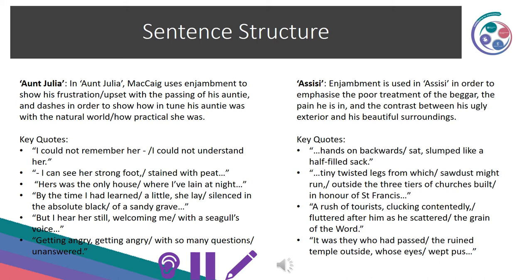In Assisi, McCaig also uses enjambment to emphasise the poor treatment of the beggar, the pain he's in, and the contrast between his ugly exterior and his beautiful surroundings. Key quotes: 'Hands on backwards, sat slumped like a half-filled sack', 'Tiny twisted legs from which sawdust might run, outside the three tiers of churches built in honour of St Francis', 'A rush of tourists clucking contentedly, fluttered after him as he scattered the grain of the word', and 'it was they who had passed the ruined temple outside, whose eyes wept pus.' Remember to pause the video to make notes.